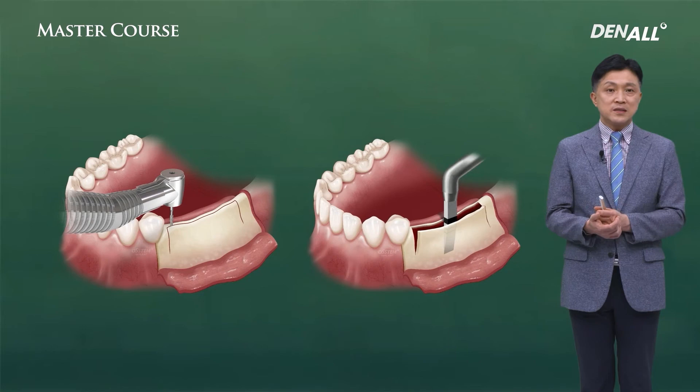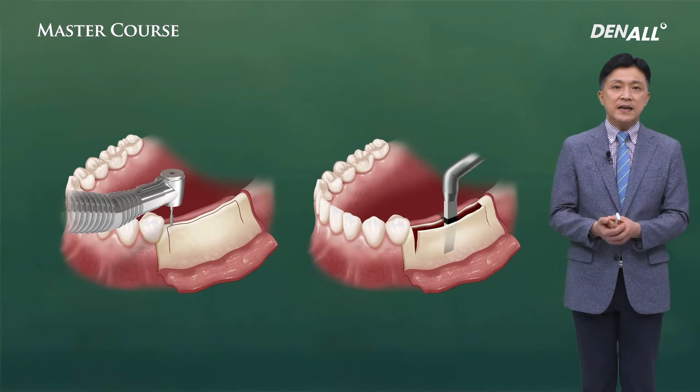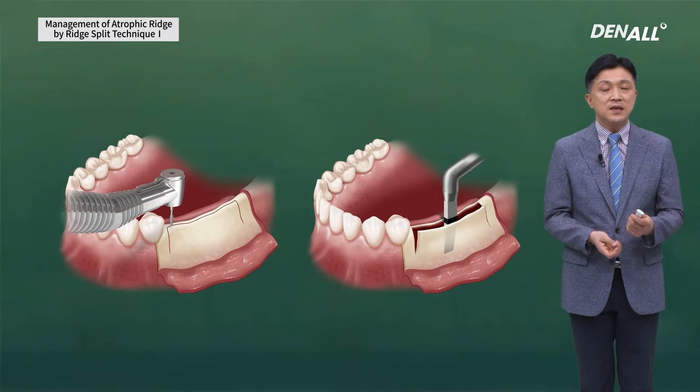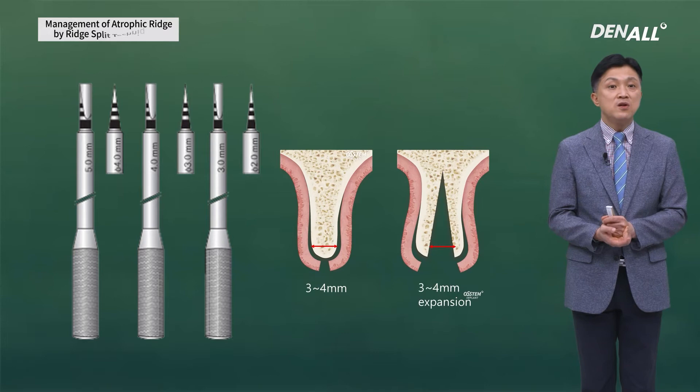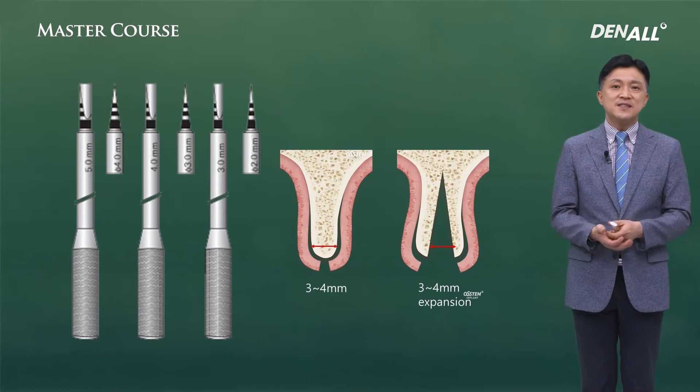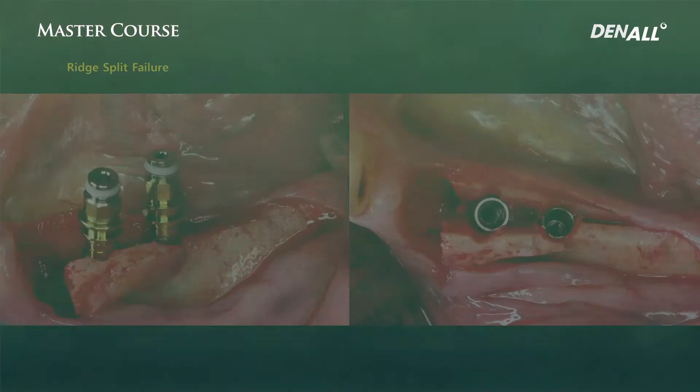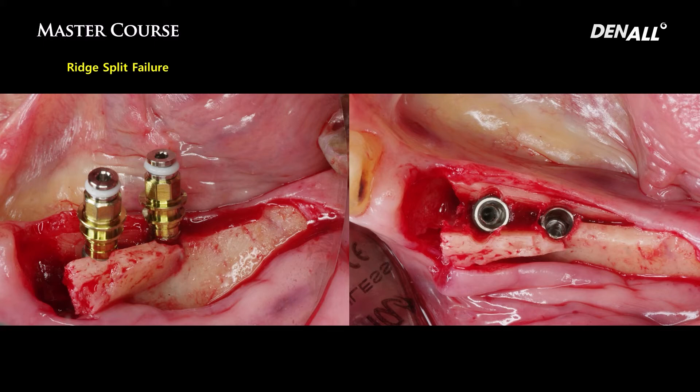The problem with the traditional approach is that vertical osteotomy was imperative. You need to do a vertical releasing incision to perform vertical osteotomy. The downside is that the surgical field expands and patient discomfort increases. Using ridge splitting osteotomy was frequent, but it is associated with many problems. If the split is not done properly or the indication is wrong, complications can occur.